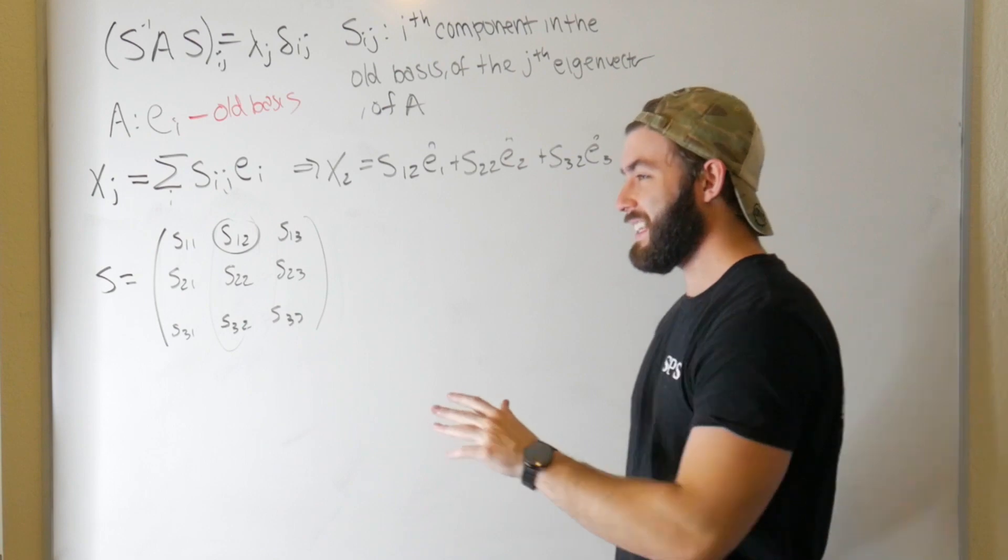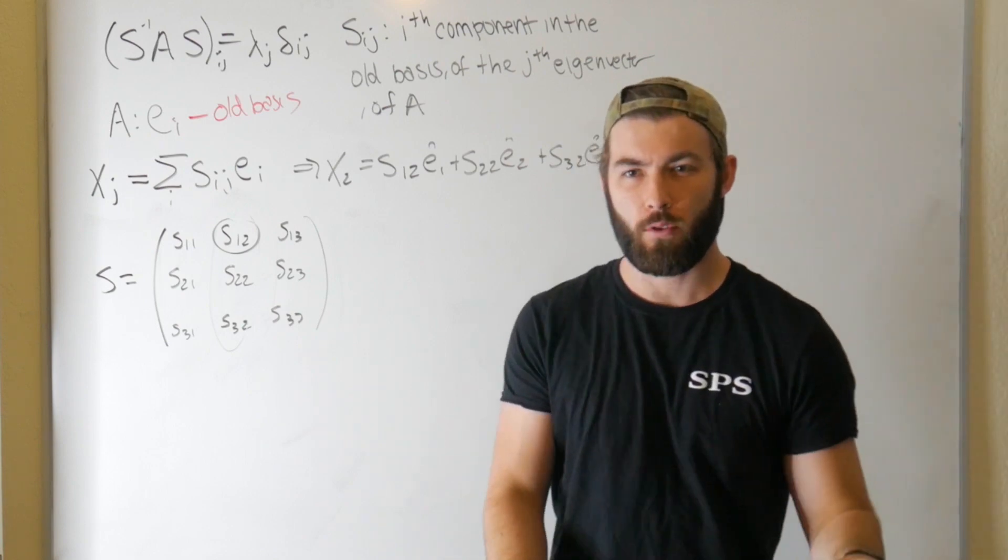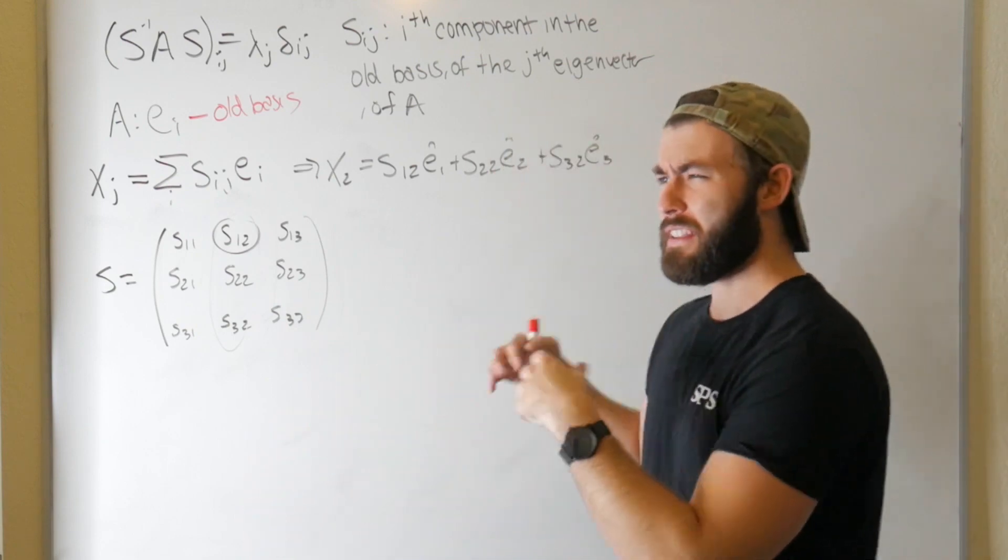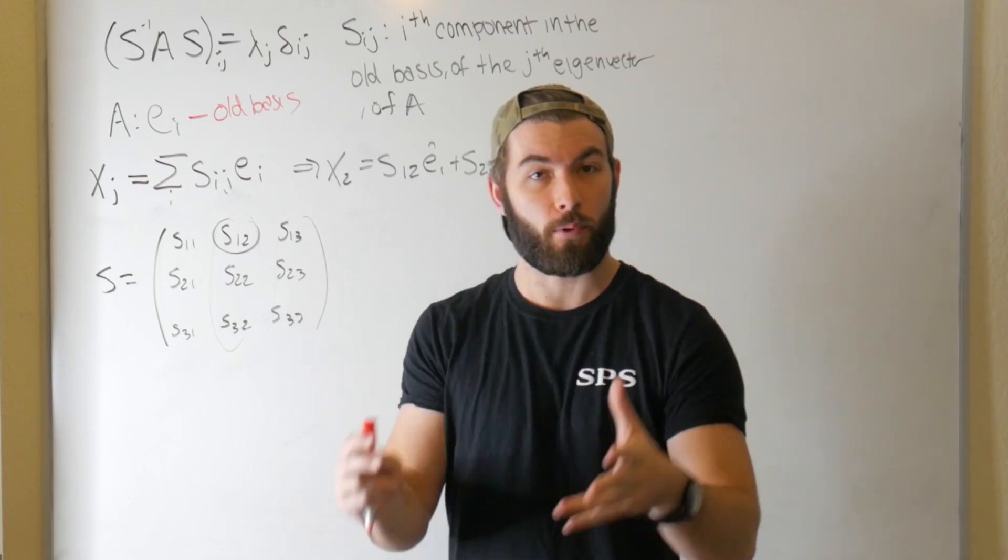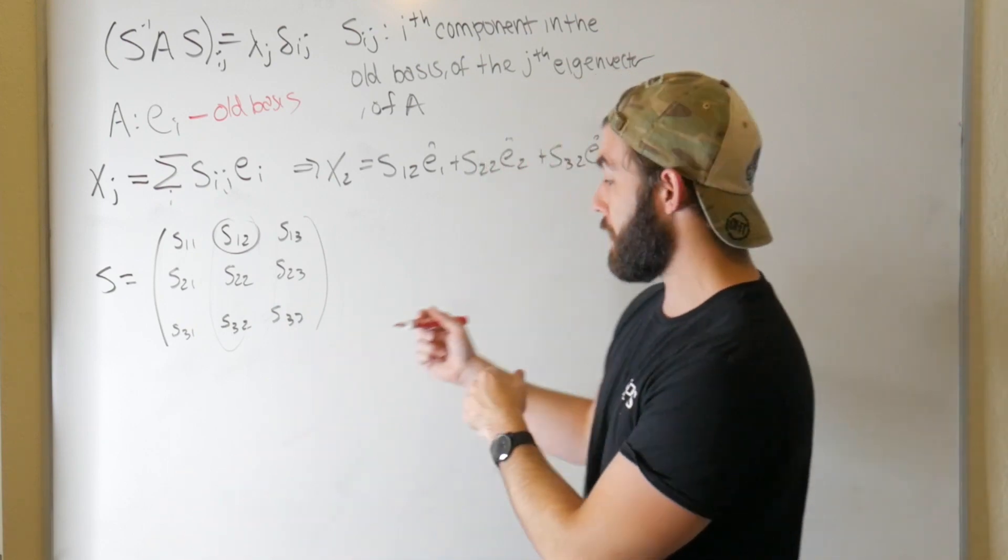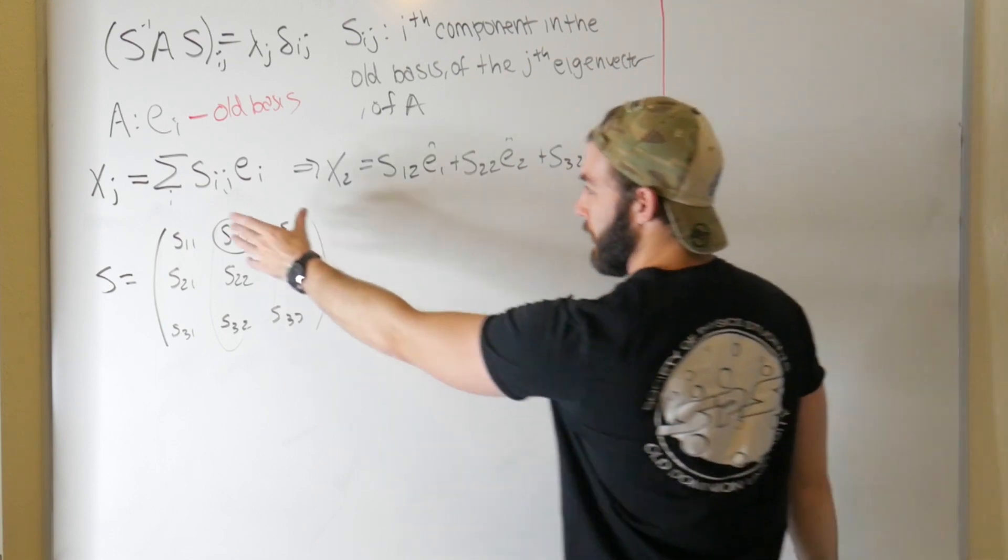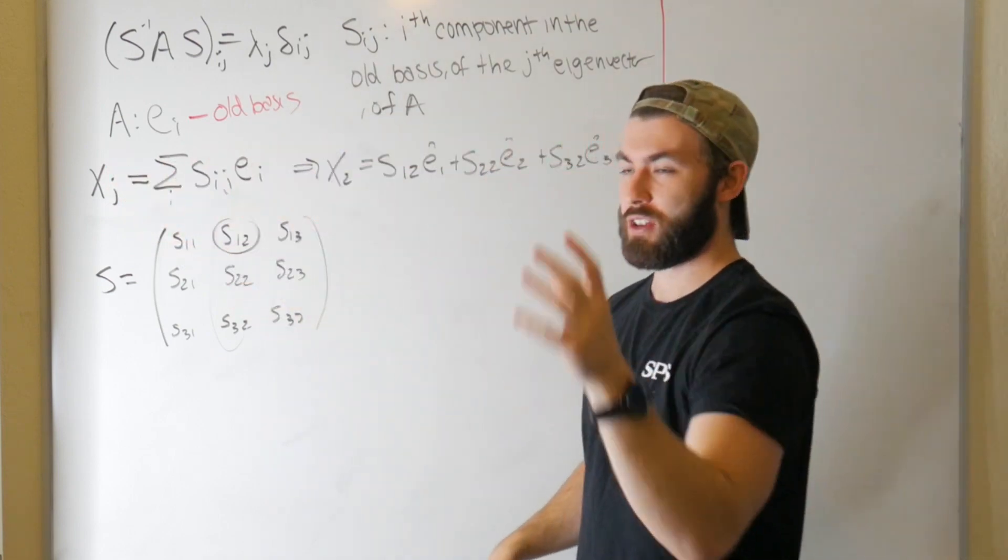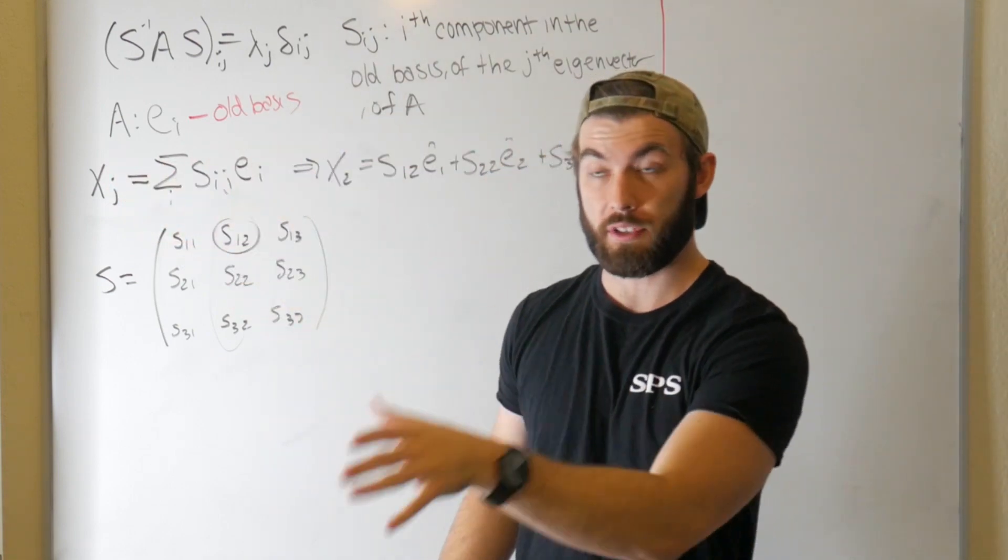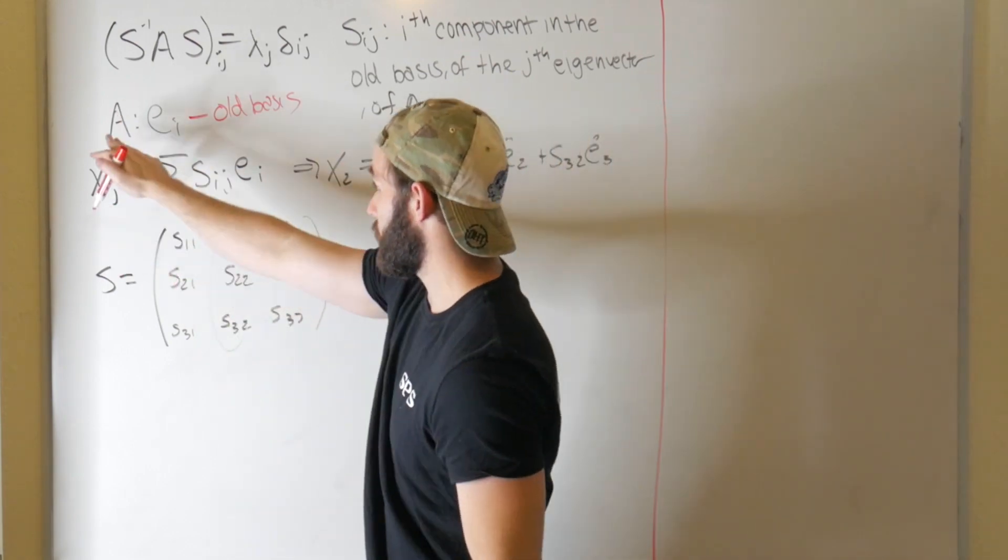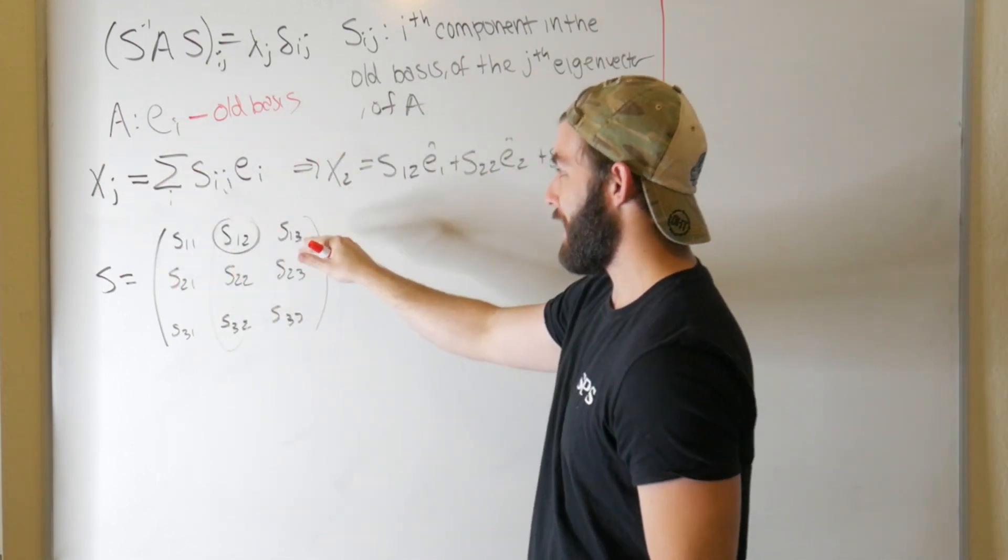But before we go any further, we need to talk about what it means to transform from vectors in one basis to being represented in another. And then by extension, we'll find out what it means for a matrix to do the exact same thing. So we'll put this off to the side. Okay, here we just showed that we can construct basis vectors out of a linear combination of the old basis vectors. They don't have to be eigenvectors. What makes this whole thing special at the end is that they are.